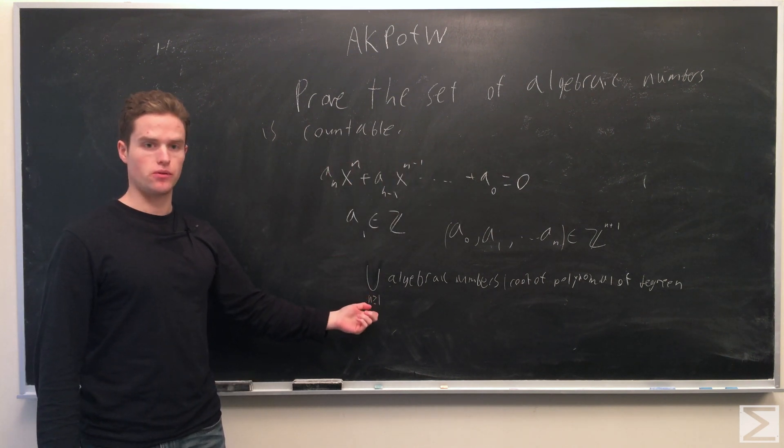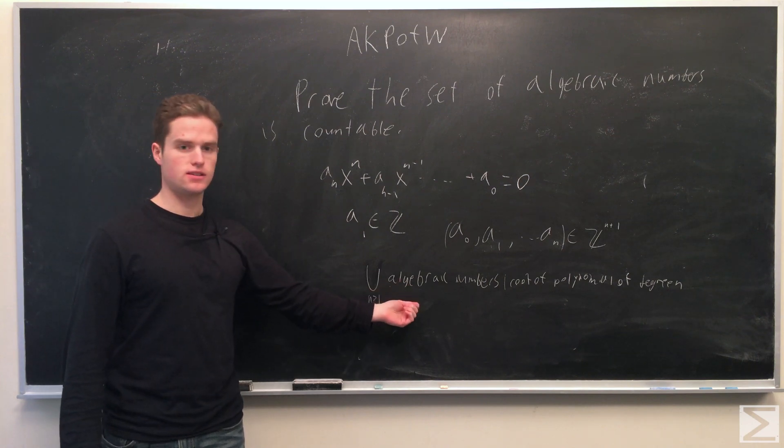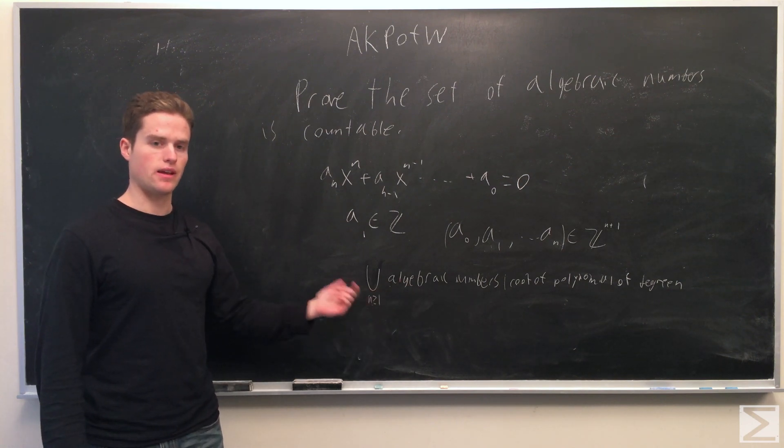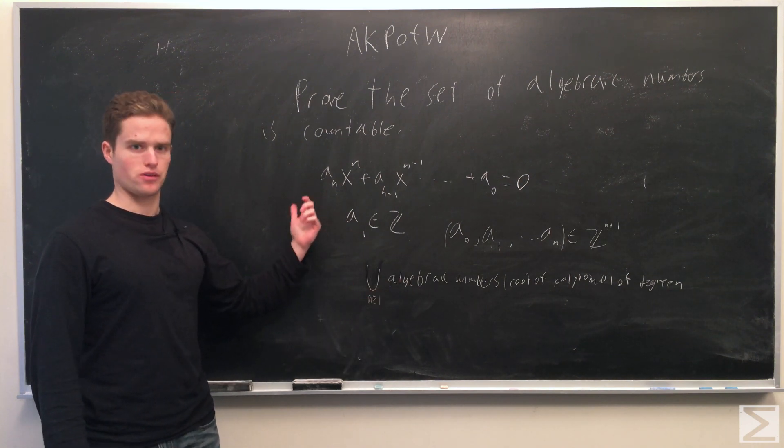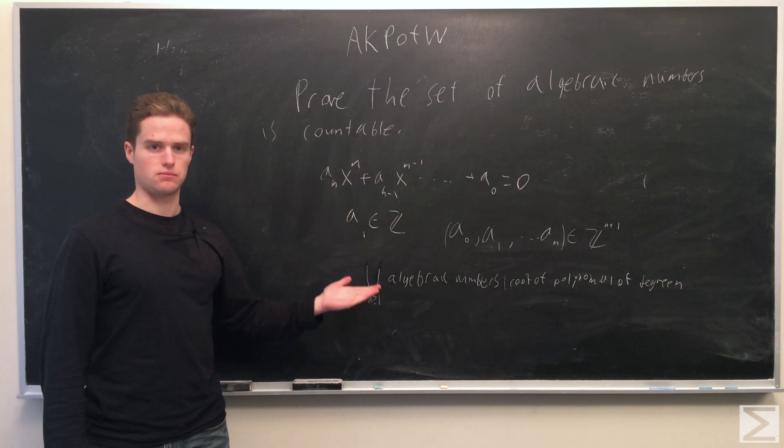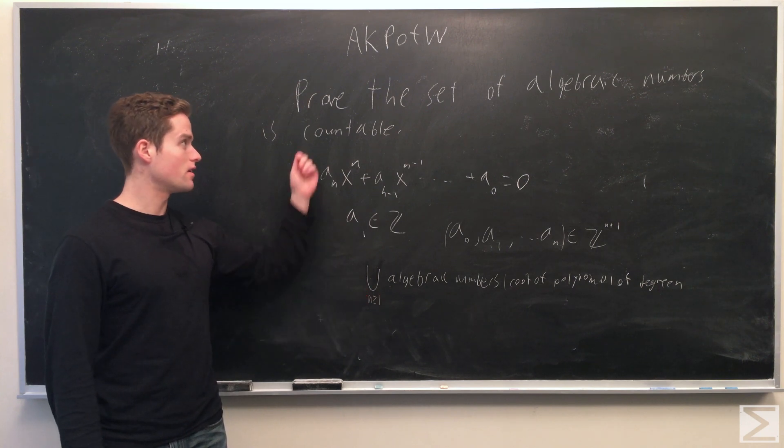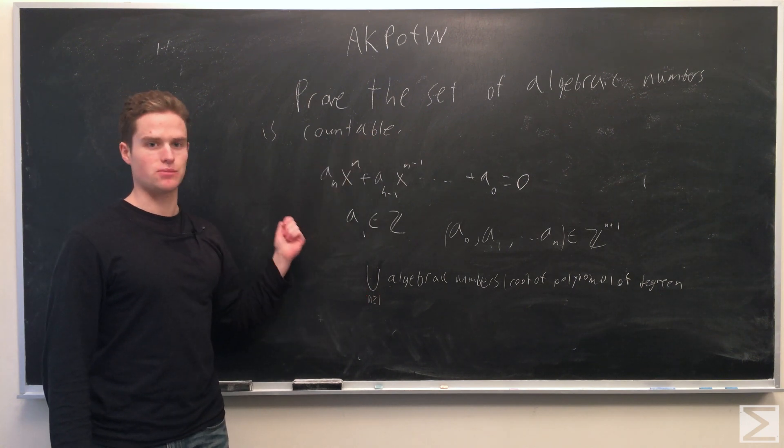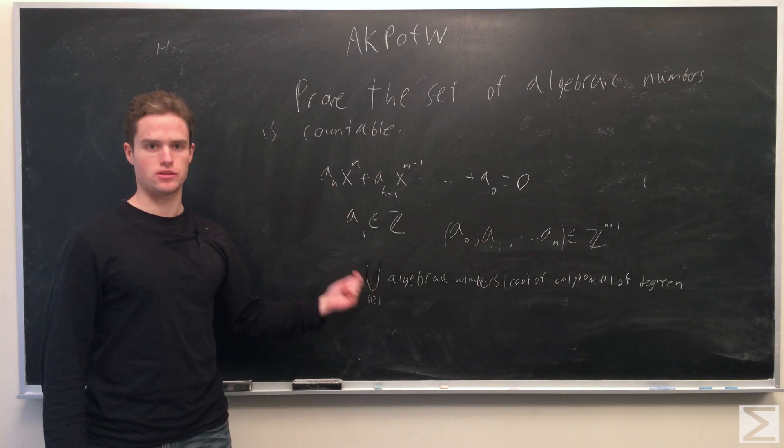This is a countable union of countable sets, which again will be countable, because it's no more than Z cross Z product Z. And so that's it. So now we see that we're left with a union, a countable union of countable sets.